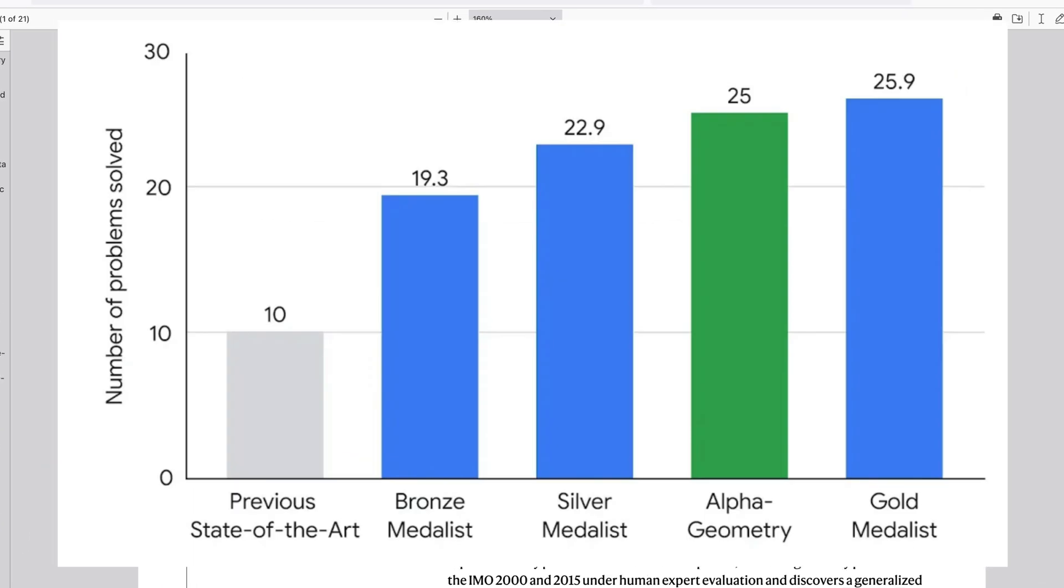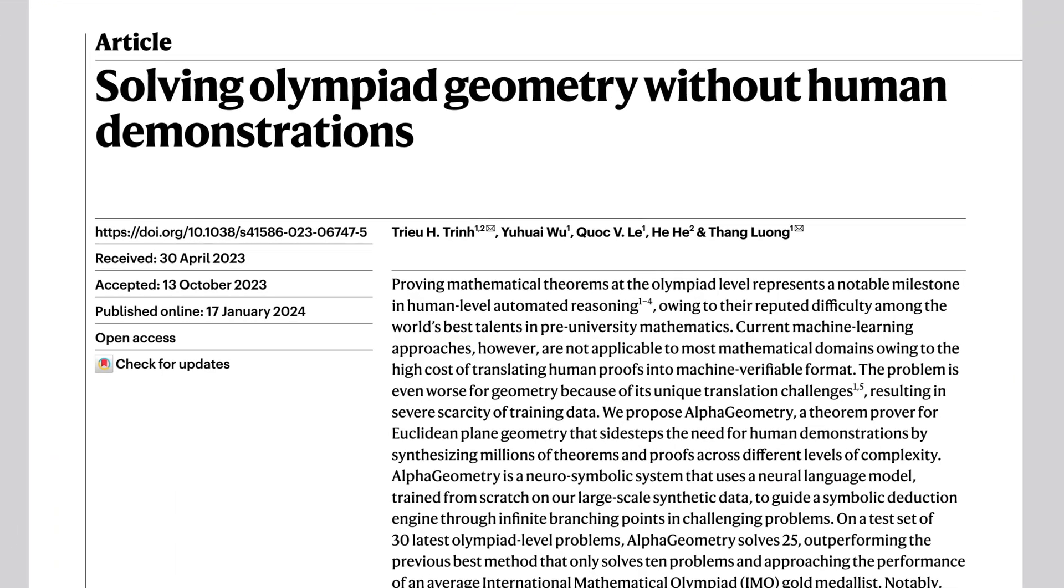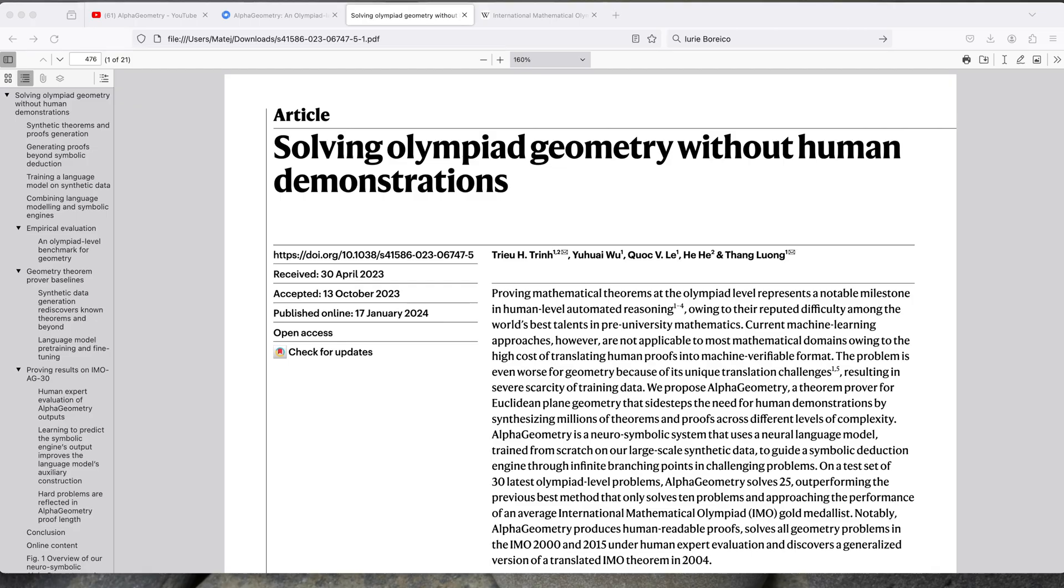Google's AI, AlphaGeometry, is incredible at solving math Olympiad problems, but for me there are two key concepts that I don't want you to miss.